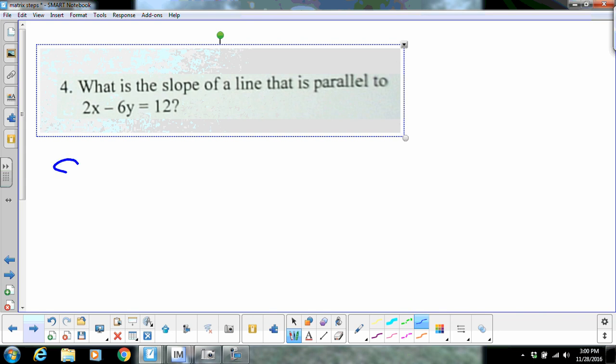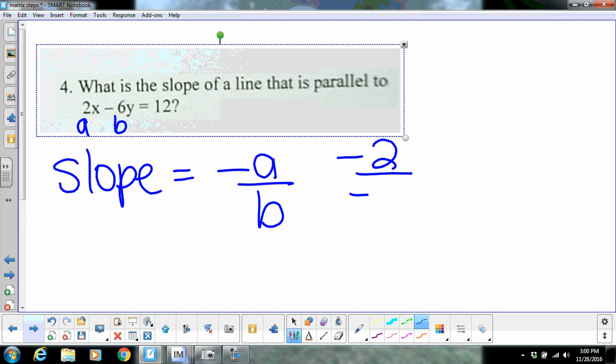All right, remember, we talked today. Shortcut from standard form is always opposite of A over B. Here's your A, here's your B, so the opposite of 2 would be negative 2. B is negative 6, and this does reduce to 1 third. Because it said parallel, the answer is just 1 third. If it said perpendicular, we'd have to flip it and change its sign.